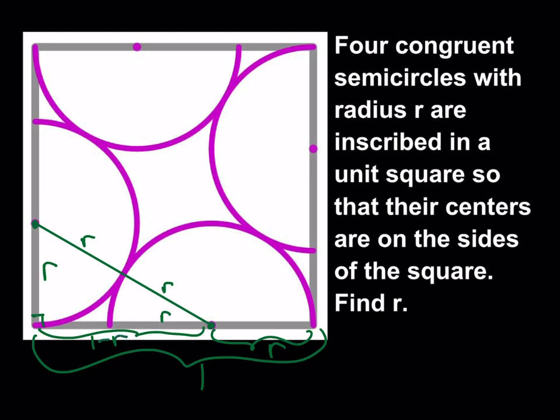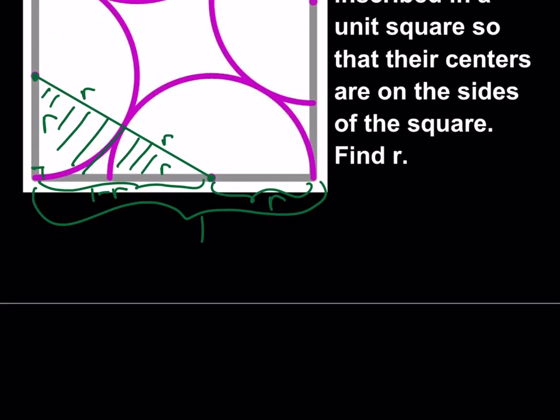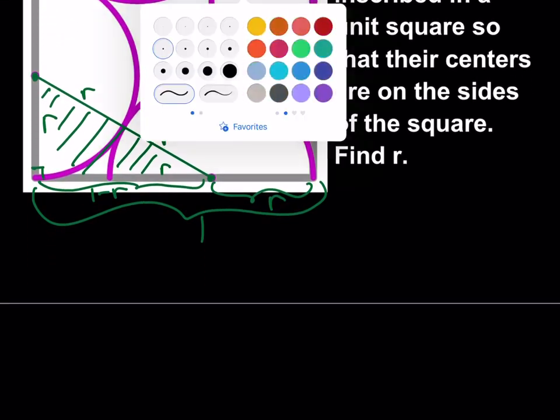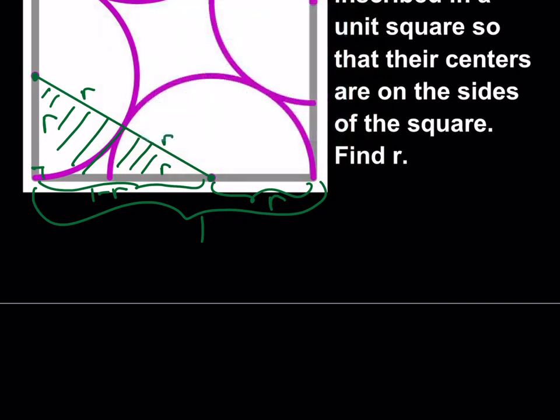How can we proceed? We can definitely proceed with the Pythagorean theorem. Let's go ahead and use the Pythagorean theorem in this right triangle. The first method is r squared plus (1 minus r) squared is equal to (2r) squared. I'm basically using the Pythagorean theorem without really making any assumptions about this triangle or using any special rules.